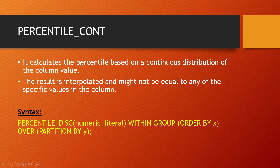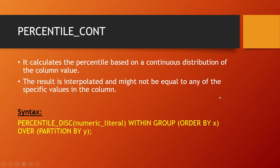Percentile cont. It calculates the percentile based on continuous distribution of the column value. The result is interpolated and might not be equal to any of the specific values in the column. The syntax is: PERCENTILE_CONT(numerical literal) WITHIN GROUP (ORDER BY ...) OVER (PARTITION BY ...).